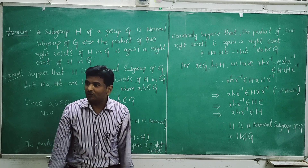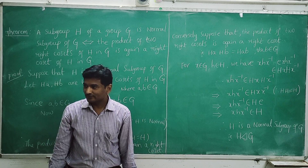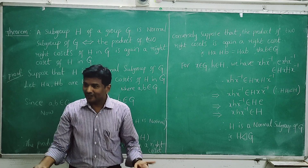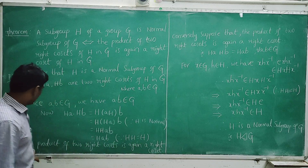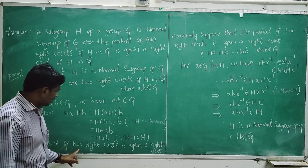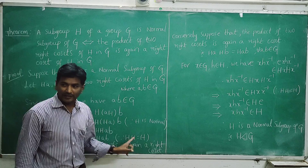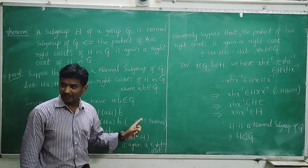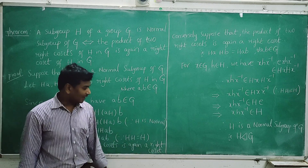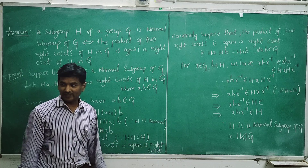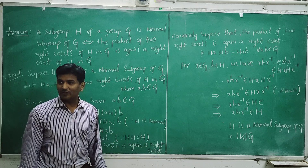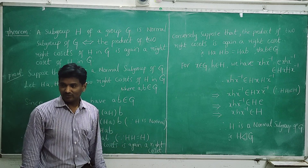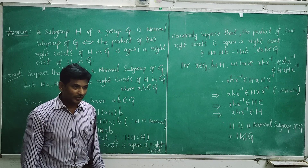So we get a right coset. Therefore, the product of two right cosets is again a right coset. This completes the first part of the proof.